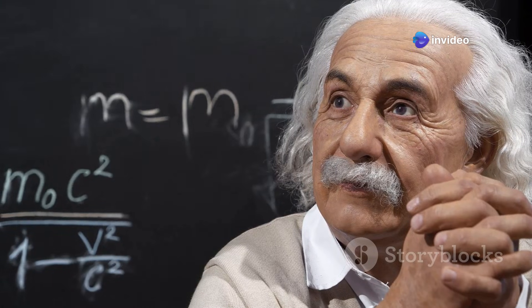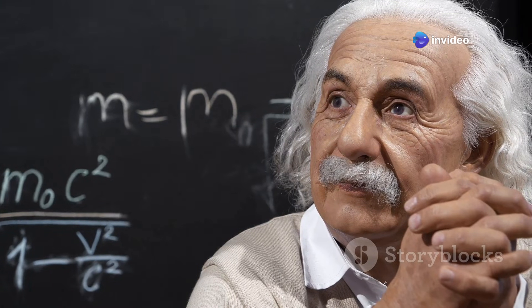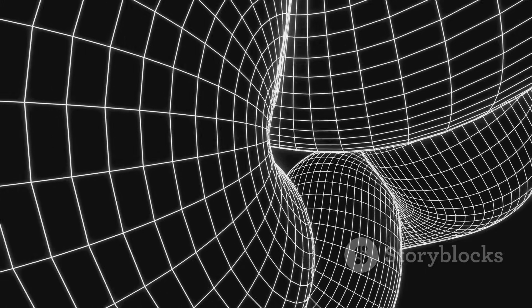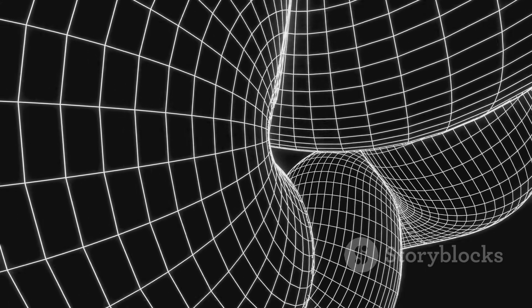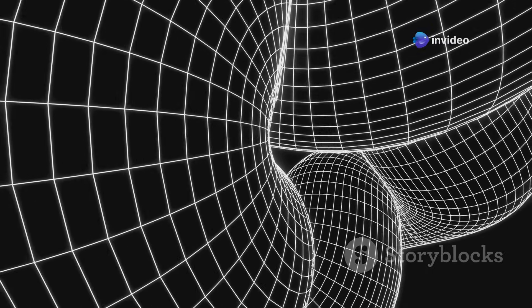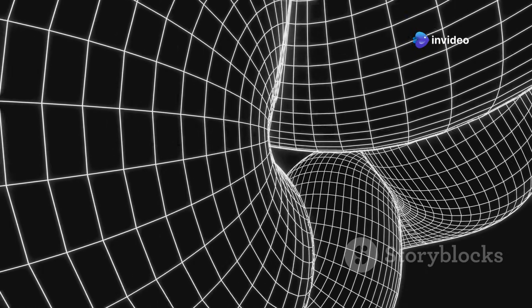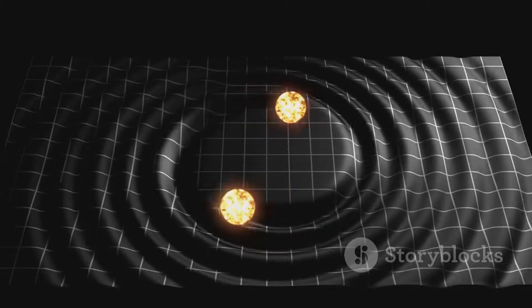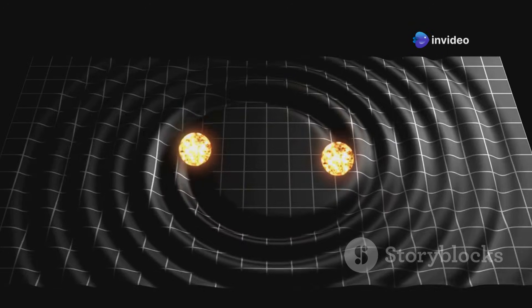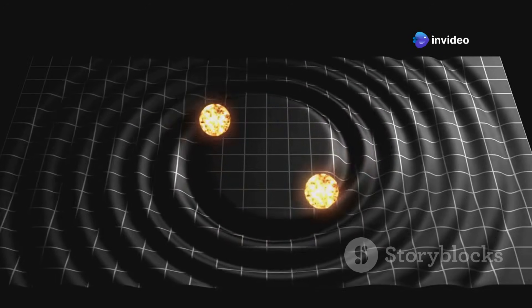However, Albert Einstein's revolutionary theory of general relativity shattered this classical view. Einstein proposed that space and time are not separate entities, but rather interwoven into a single dynamic fabric: space-time. This four-dimensional fabric is not merely a static backdrop for the events of the universe. Instead, it is an active participant, warping and curving under the influence of matter and energy.